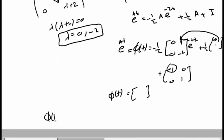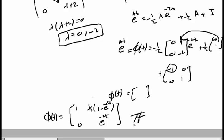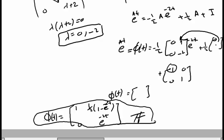The final answer for the state transition matrix Φ(t) is: [1, ½(1 − e^(−2t)); 0, e^(−2t)]. I'll leave the detailed matrix multiplication as an exercise for you. This is the solution for our problem — the state transition matrix. Thank you for watching. If you have any questions, please leave them in the comments below. See you next time.